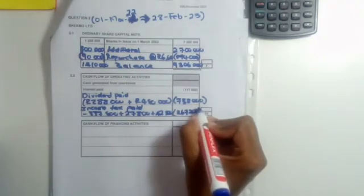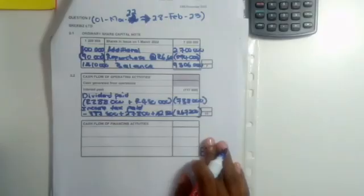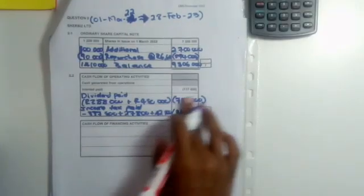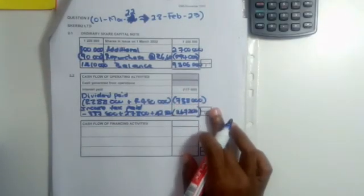In my answer book I'm going to put this amount in brackets to show that it is a payment and therefore a cash outflow.